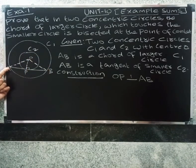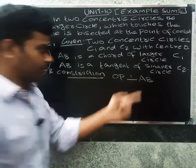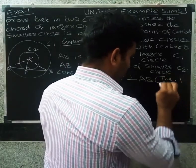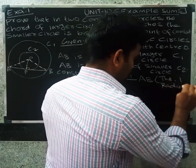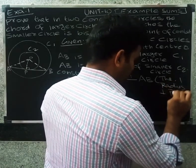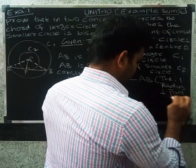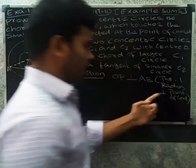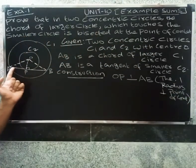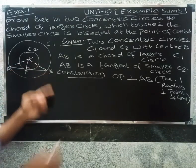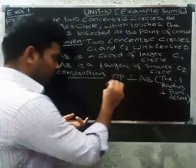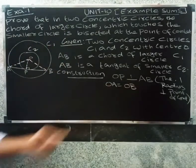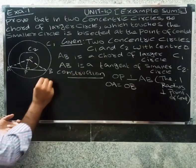By Theorem 1, the radius is perpendicular to the point of contact. Also, OA equals OB, since both are radii of the larger circle C1.